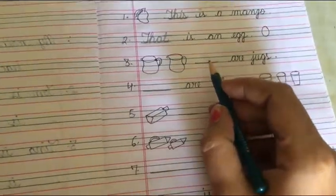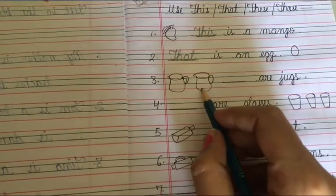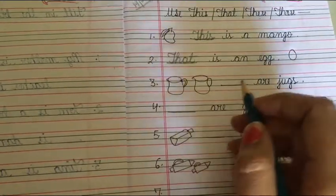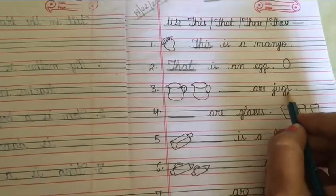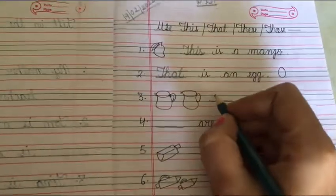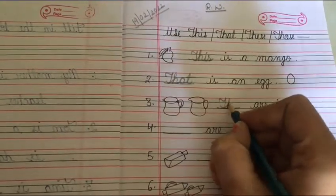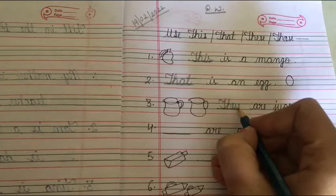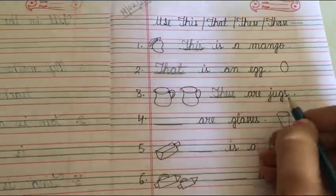Next, here two pictures of jugs are given. Blank are jugs. Two pictures, and they are near to us. Then what will we write in the blank? These. T-H-E-S-E. These are jugs.